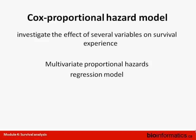None of these methods can comprehensively take into account the effect of multiple variables on the survival experience. For that purpose we have the Cox proportional hazard model, which is statistically quite a complex model. The goal of this model is to investigate the effect of several covariates on survival experience — that would be the multivariate proportional hazard regression model, though you can also use a univariate version with just one covariate.